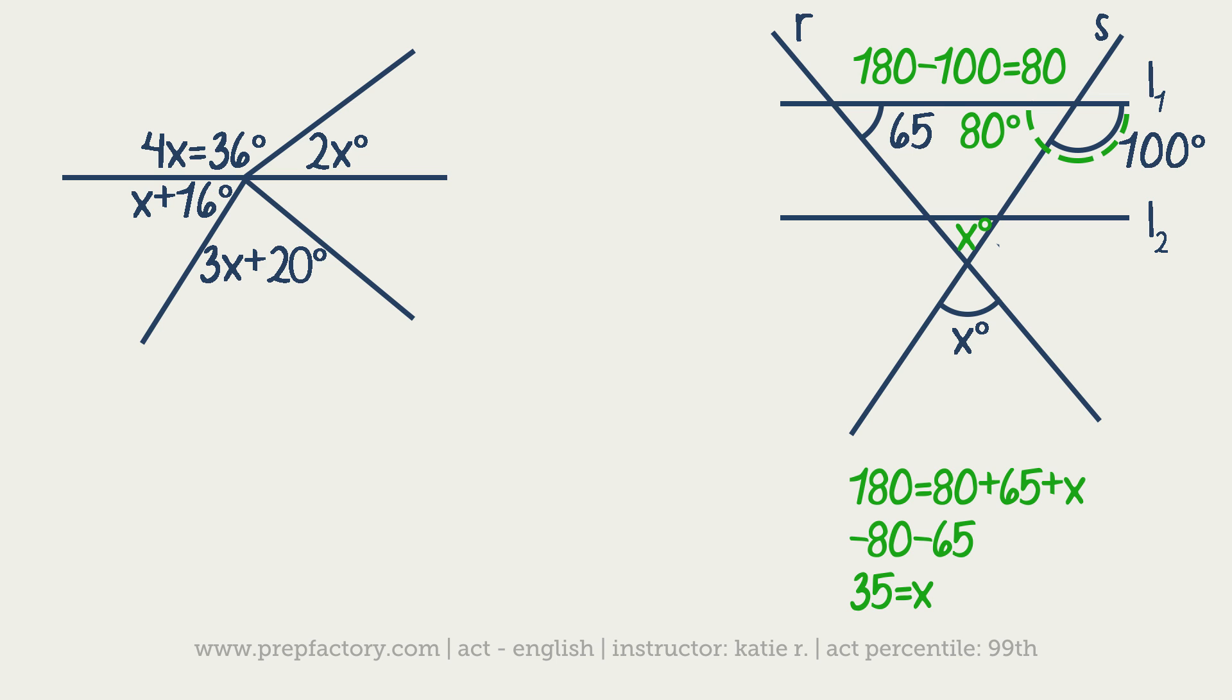Let's say that we saw a problem something like the one at the left. Our first angle is 4X plus 36 degrees, then there's 2X degrees, the angle below that is equal to the angle above so that's another 2X degrees, and then still moving clockwise we've got 3X plus 20 degrees, and then X plus 16 degrees. We are going to look for the smallest angle.